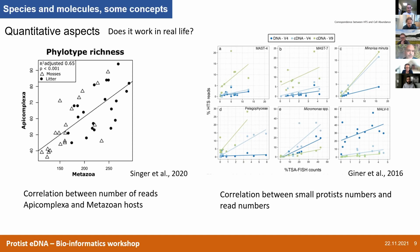For instance, we can have good correlations between the number of metazoa and the number of parasitic apicomplexa — which are parasites of metazoa — that you find in the soil. And sometimes it even works with number of individuals if the organisms have similar sizes. One paper by Giner et al. shows a direct relationship between the number of high-throughput sequencing reads and counts obtained by FISH — fluorescence in situ hybridization — on planktonic organisms. So it works pretty well.